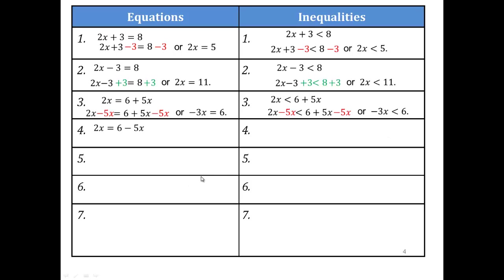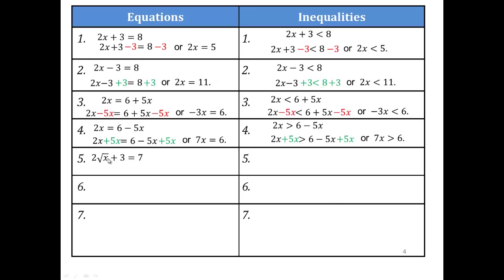How do you undo subtraction of 5x? You add 5x. So 2x plus 5x equals 7x, giving 7x equals 6. It doesn't matter what kind of equation or inequality you have — if you add or subtract the same number from both sides, you preserve the equality or inequality. Subtracting 3 from both sides gives you the simplified result, and you can do the same if it were an inequality.